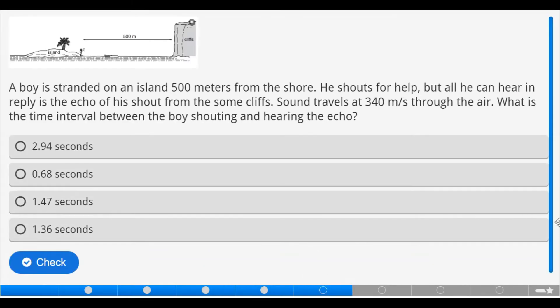Now, looking at this question, let's solve it before we pick the answer. You can see an island, a man standing very at the edge of the island, which is 500 meters away from a cliff. A man is stranded on an island 500 meters from the shore. He shouts from air, because all he can hear in reply is the echo of a shout from some cliffs. Sound travels at 340 meters per second through the air. What is the time interval between the voice shouting and hearing the echo?